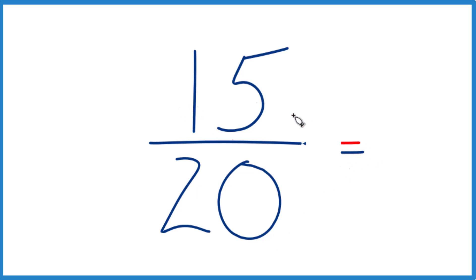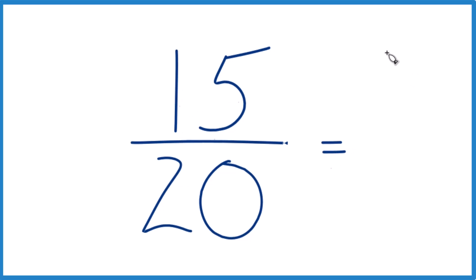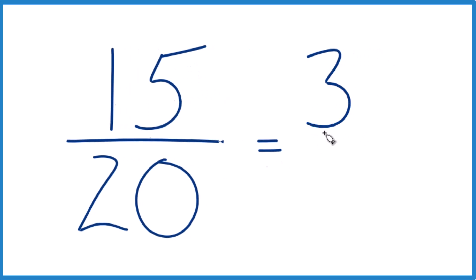If I divide 15 by 5, I get 3. 3 times 5 is 15. If I divide 20 by 5, I get 4. So I end up with 3/4, and I can't reduce or simplify this fraction any further. It is in lowest terms.